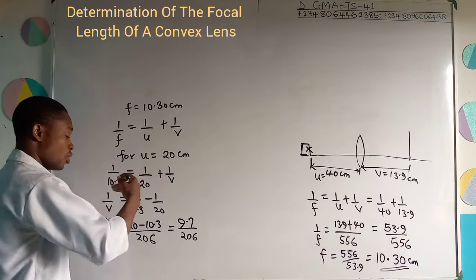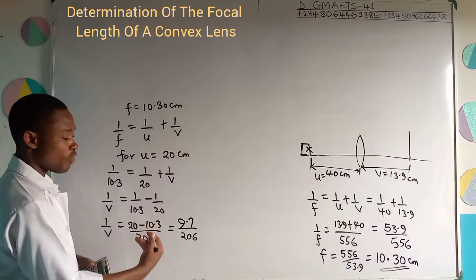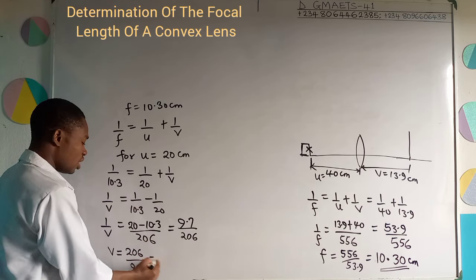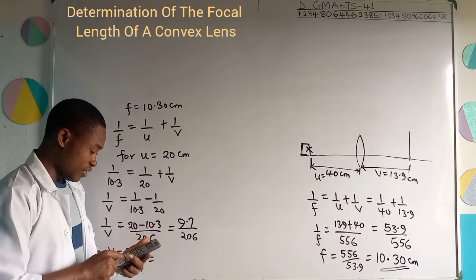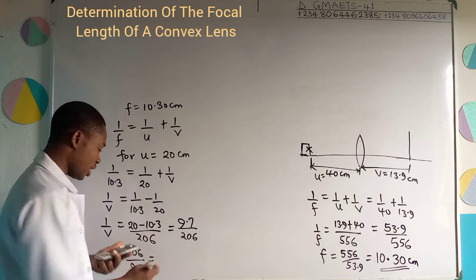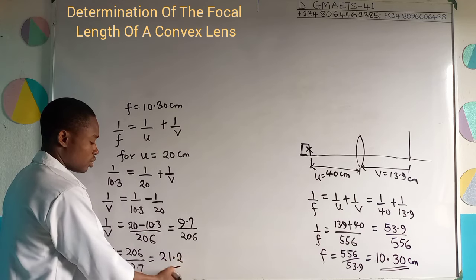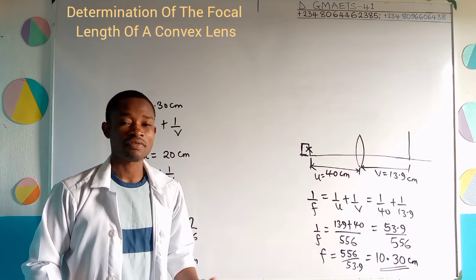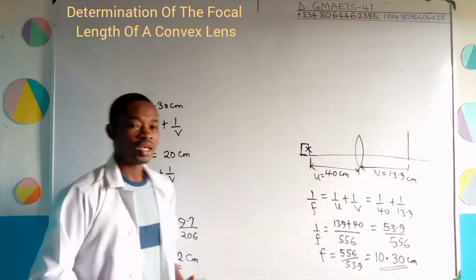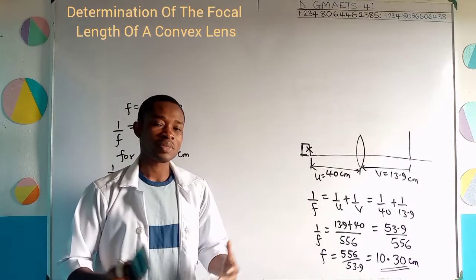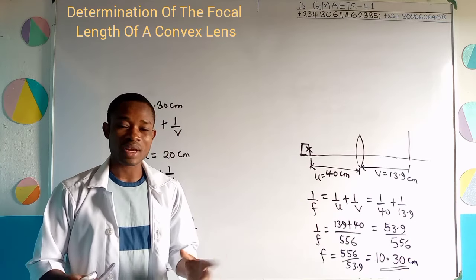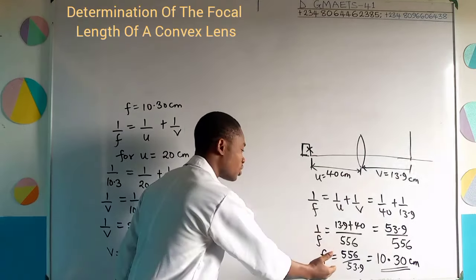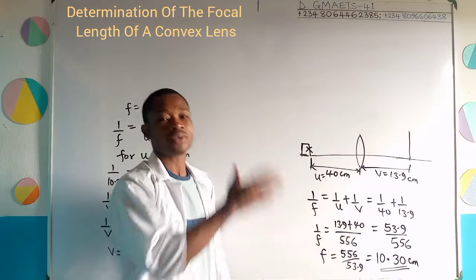Inverting to get the image distance: V equals 206 over 9.7, which gives 21.2 cm. By carrying out the actual experiment, I obtained 21.5 cm. Within the limits of experimental work, 21.5 and 21.2 are approximately the same and can be used. Error could have affected the reading.